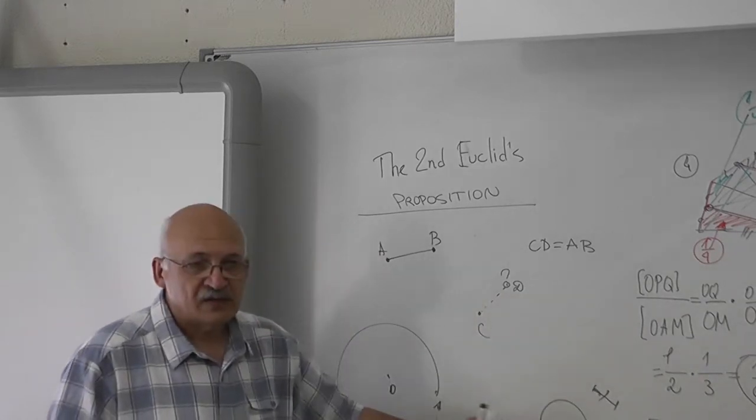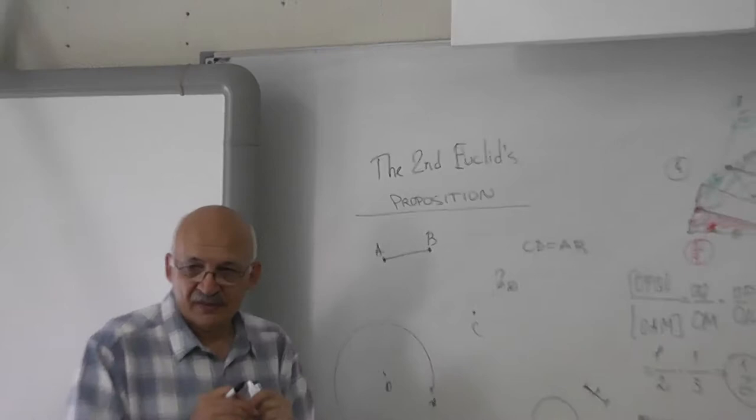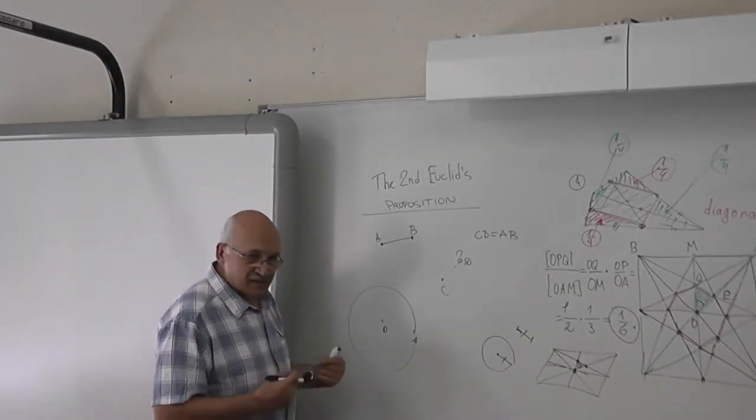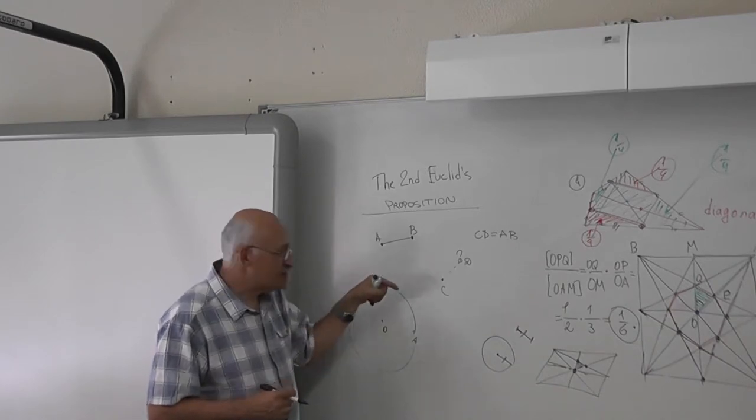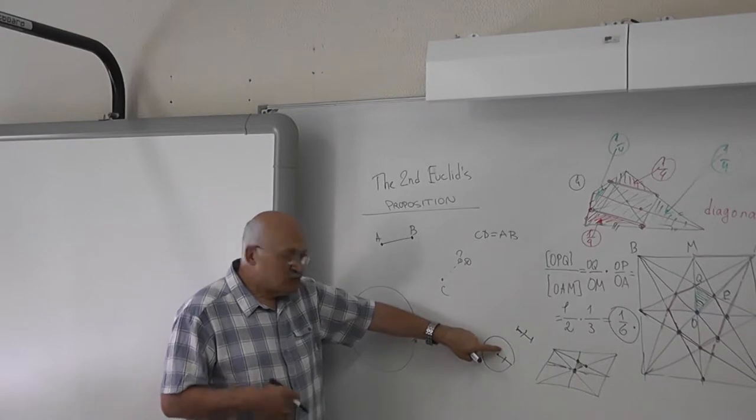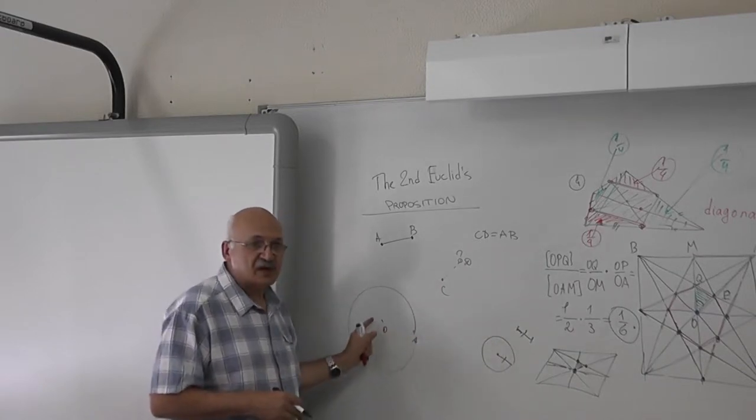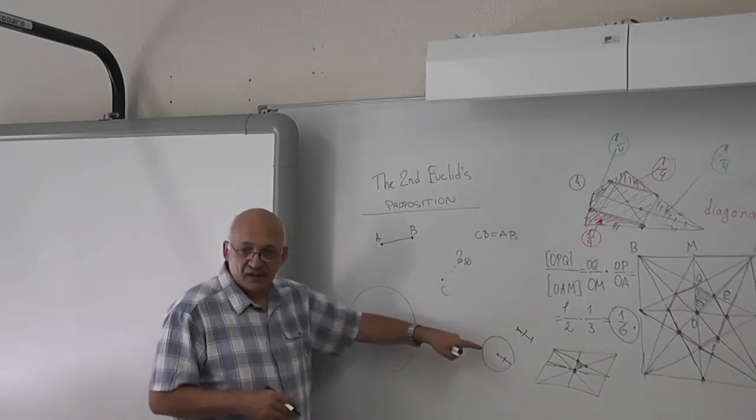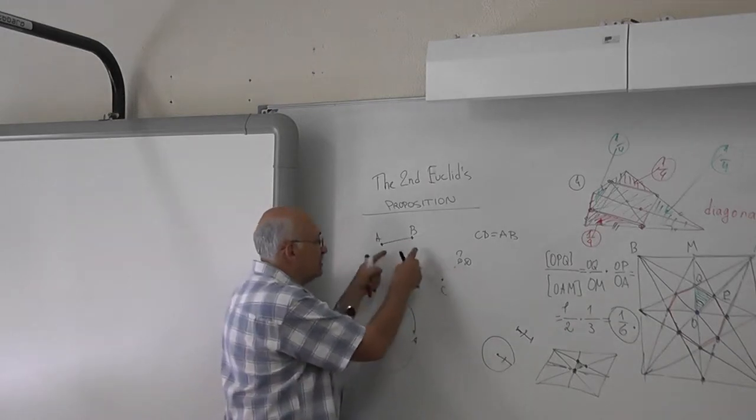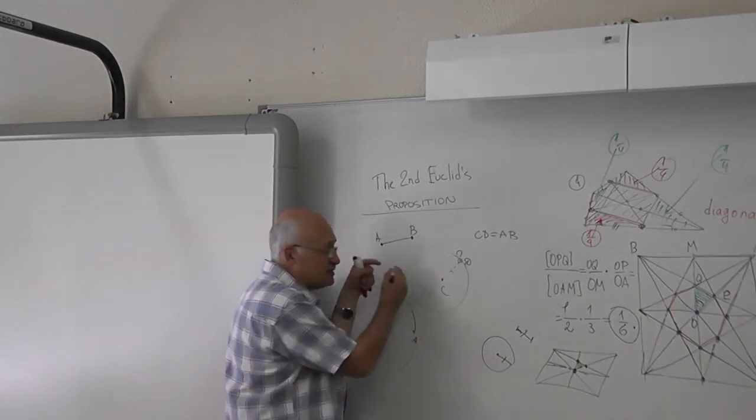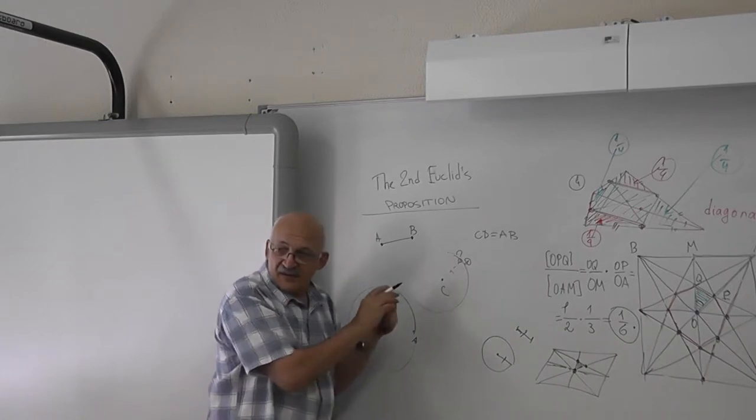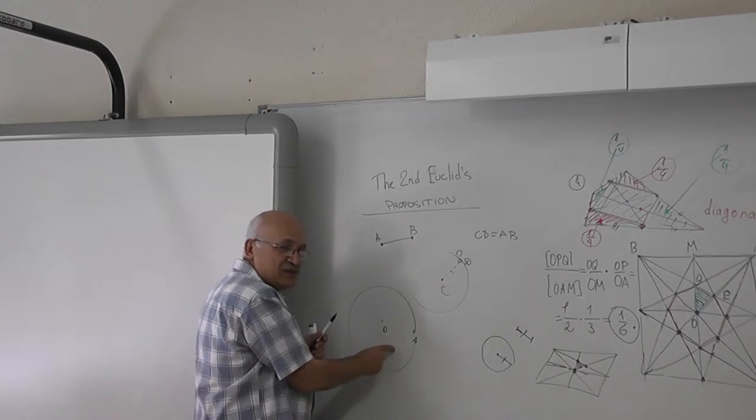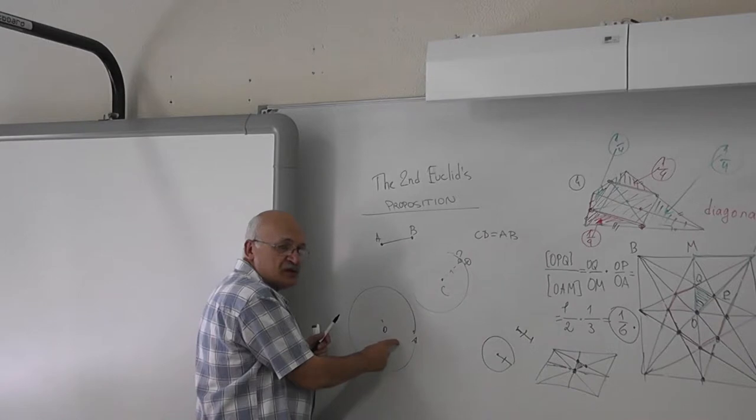So for Euclid, the real compass, the actual circle, was this one. But in his second proposition, he explains how to model this compass using this one. Because if you can place the segment, equal segments here, then automatically you can draw a circle. So you use only the circle tool.